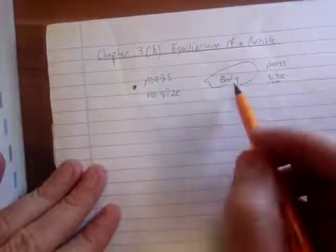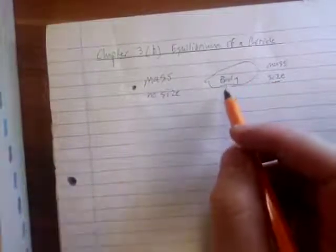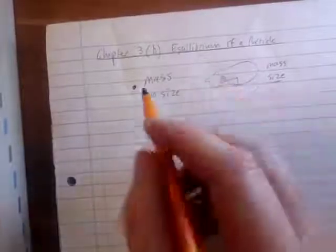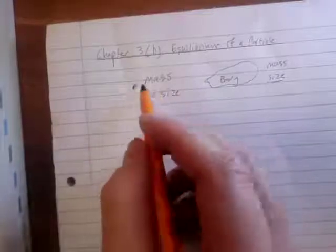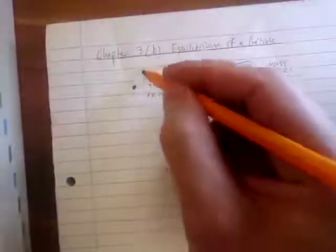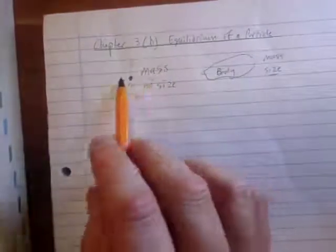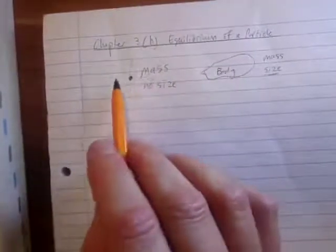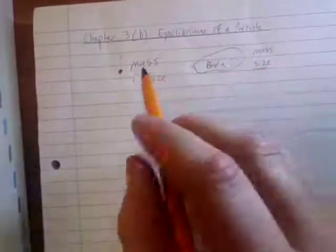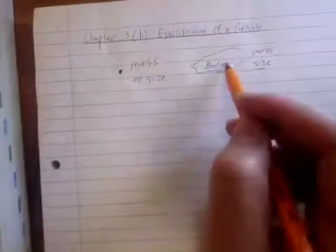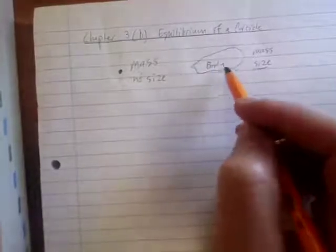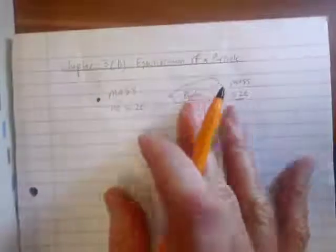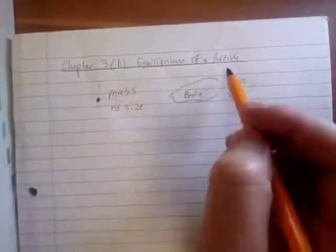Okay, you'll see the significance of that. Remember what I spoke in the first few lectures: if we have a particle with mass and no size, then all we're doing is we're considering essentially its straight line movement. We're just looking at what happens in terms of translational movement, moving in a straight line. Whereas with a body, remember that we're looking at both straight line movement and this body can also rotate. So we're going to also look at rotational effects of a body in Chapter 4 and 5. Okay, but in Chapter 3, we're starting off with just the equilibrium of a particle.